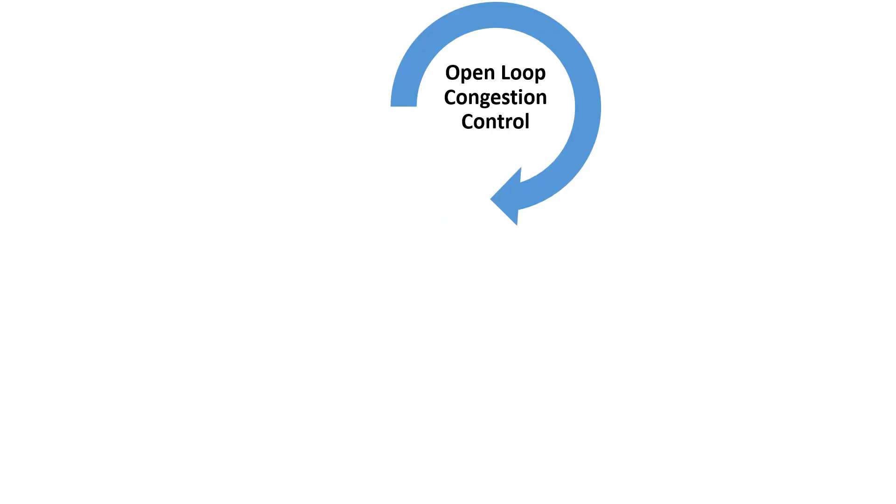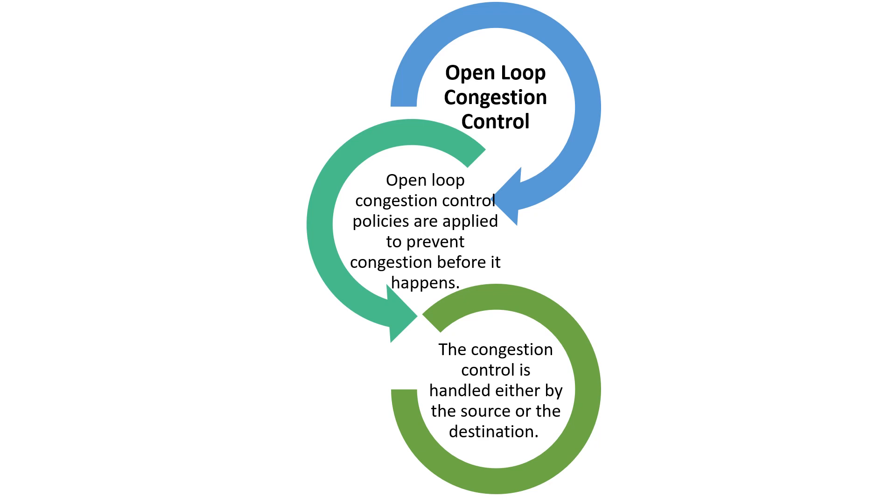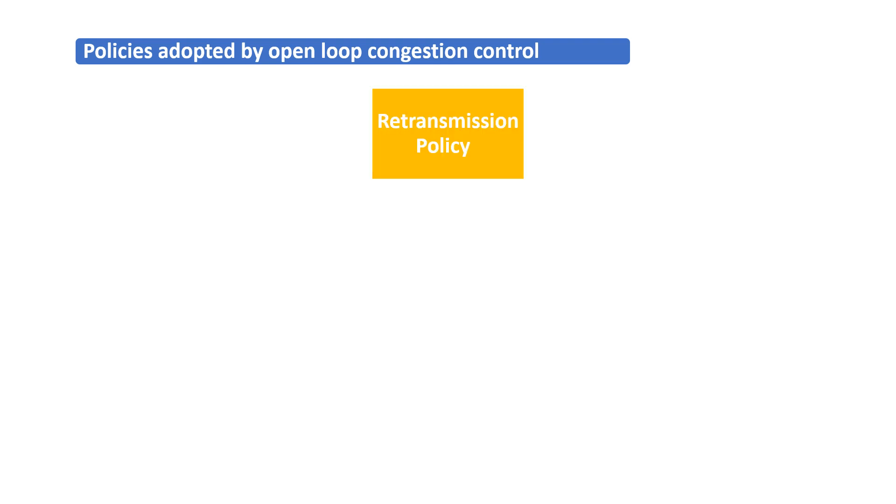First, let's see what open loop congestion control is. These are policies which are applied to prevent congestion before it happens, and this is handled either by the source or destination. Congestion control policies done before the congestion happens are termed as open loop congestion control. There are various policies adopted by open loop congestion control, and we can see them one by one.